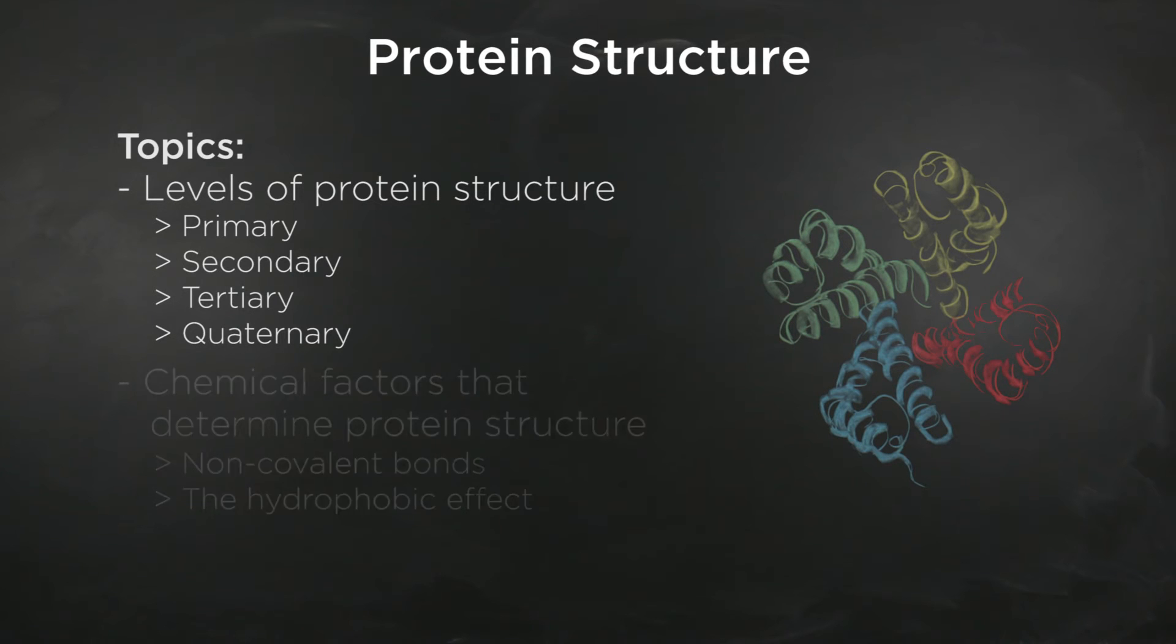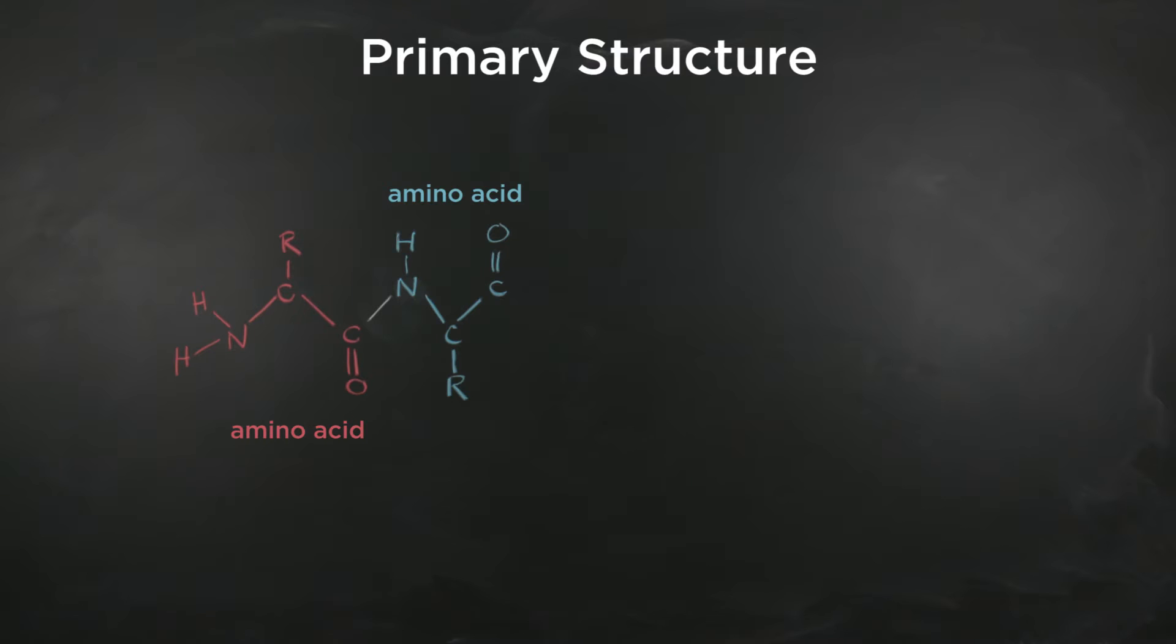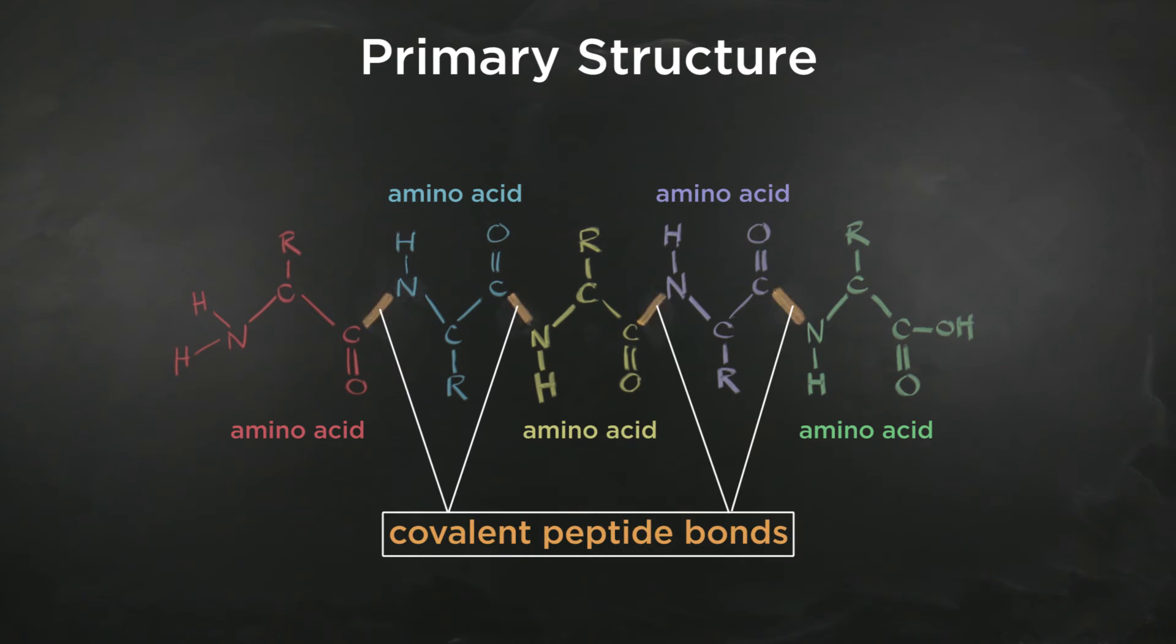Let's begin with the four levels of protein structure, starting with the primary structure. Proteins are composed of a series of amino acids connected together by covalent peptide bonds. This is the first level of protein structure, the primary structure.